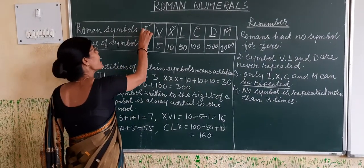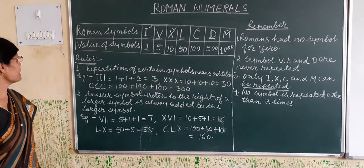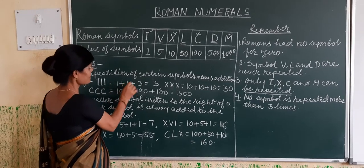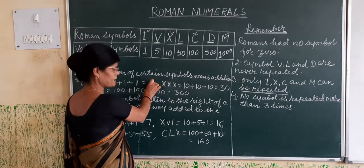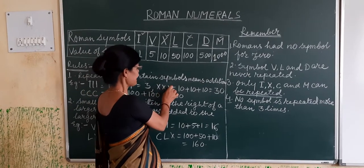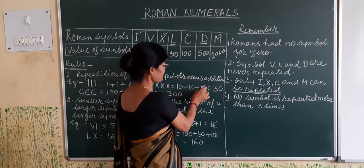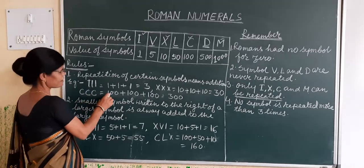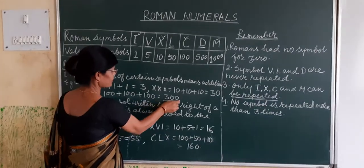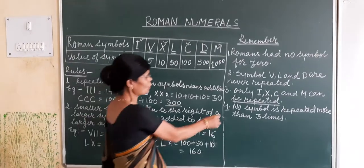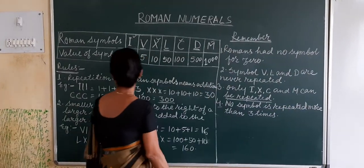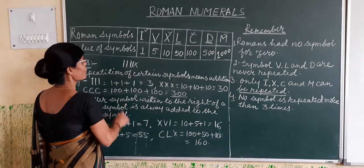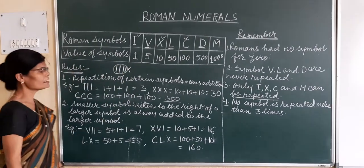So we can write I three times: I, I, I equals 1 plus 1 plus 1 equals 3. Triple X means 10 plus 10 plus 10 equals 30. C, C, C means 100 plus 100 plus 100 equals 300. We cannot repeat a symbol more than 3 times — that would be wrong. Only three times is allowed.